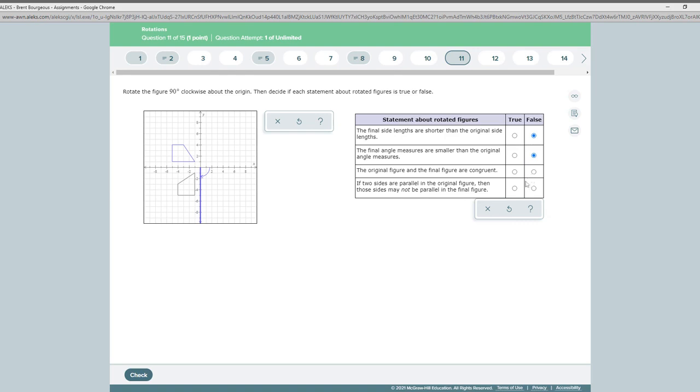The original figure and the final figure are congruent. That's a true statement. If two sides are parallel in the original figure, then those sides may not be parallel in the final figure. That would be a false statement. So it's just trying to see if you understand that when you rotate something, you do not change its shape.